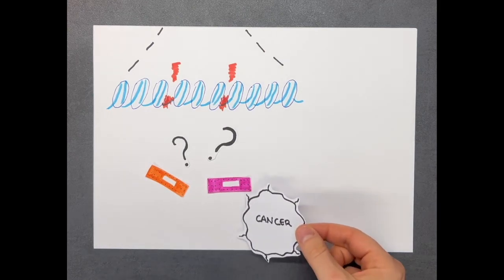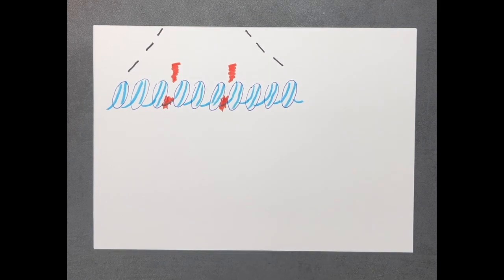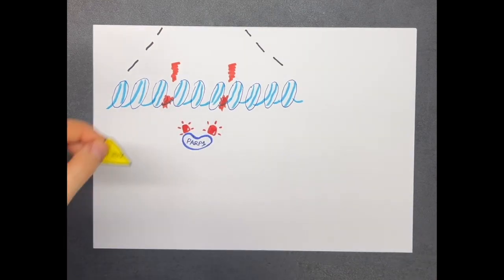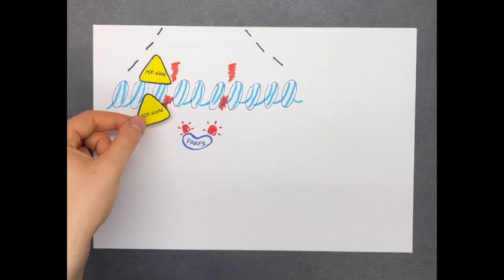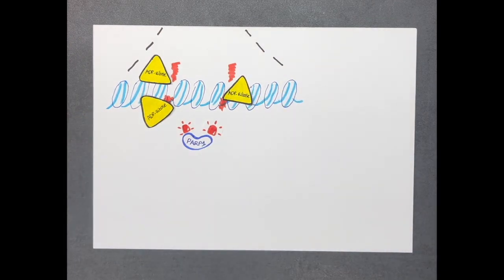Left unrepaired, these damages can lead to cancer development or cell death. One of the earliest actors in this process is a protein named PARP1. Its role is to find the DNA damages and signal them by adding a chemical mark called ADP ribose along the chromatin.